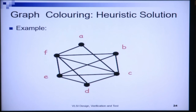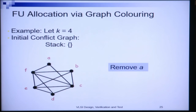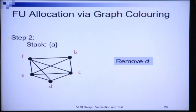Let us take an example. We are given a conflict graph with operations a, b, c, d, e, f, all of the same type, and we want to allocate the minimum number of functional units needed to color this graph. We have k=4. First we search for a node with fewer than 4 neighbours. Node A has only 2 neighbours, so we remove A from the graph. A goes onto the stack. In the residual graph we then choose D, which has 3 neighbours, fewer than 4, and D also goes onto the stack.